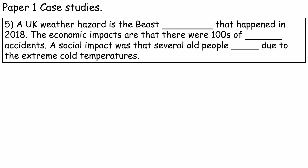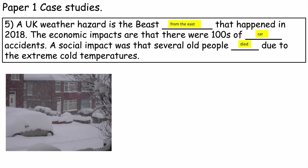Number five: UK extreme weather event. We use the Beast from the East, which happened in March 2018. The economic impacts are that there were hundreds of car accidents. A social impact was that several old people died due to the extreme cold temperatures. Here you can see lots of snow caused by the Beast from the East.